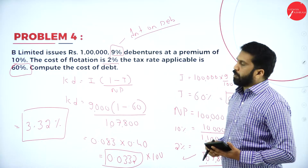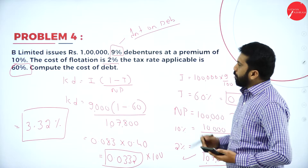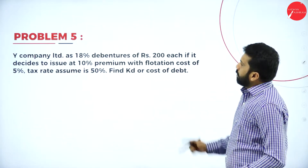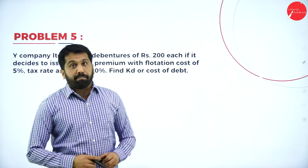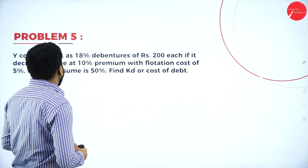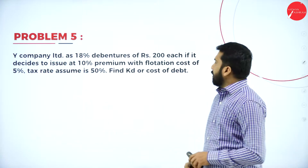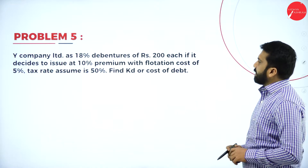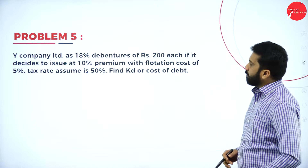This is your cost of debenture for problem number four: 3.32 percent. Hope you understood. Now we'll go for problem number five. WHY Company Limited, 18% debentures of rupees 200 each. The company decides to issue at ten percent premium with flotation cost of five percent. Tax rate assume it is fifty percent. Find out cost of debenture or cost of debt.